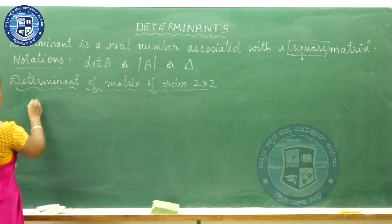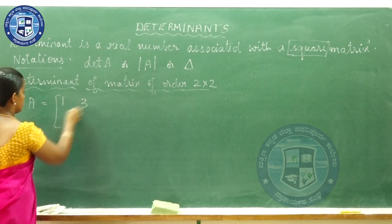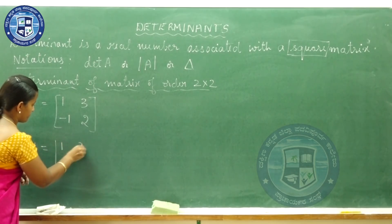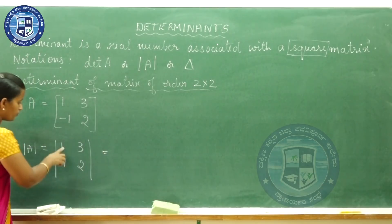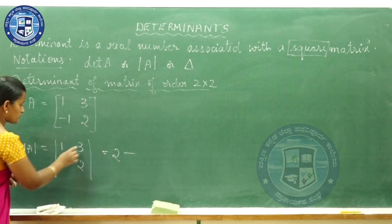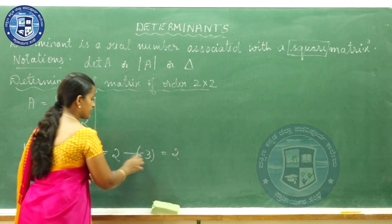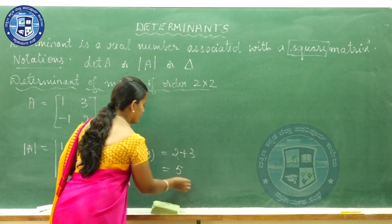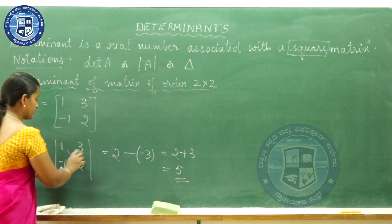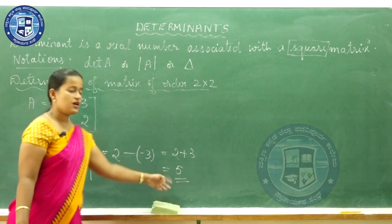Let me consider one more example. A is [1, 3; -1, 2]. So the determinant will be 1 into 2, that is 2, minus minus 1 into 3. Minus 1 into 3 is minus 3, so this becomes 2 minus (minus 3), which is plus 3. So it becomes 5. Whenever you have a minus sign, be careful — minus into minus becomes plus. So the determinant of this matrix is plus 5.